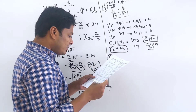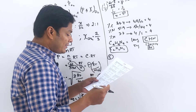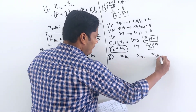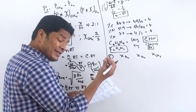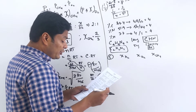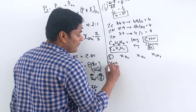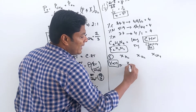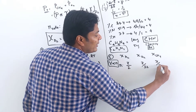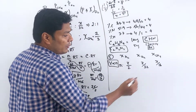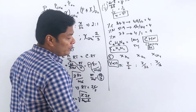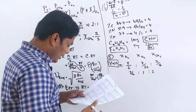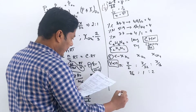Question 5: Equal masses of H2, O2, and methane under identical conditions — ratio of volumes. By Avogadro's law, V is proportional to N (moles). Moles: x/2 for H2, x/32 for O2, x/16 for methane. Multiplying by 32: ratio is 16 : 1 : 2. Option C.